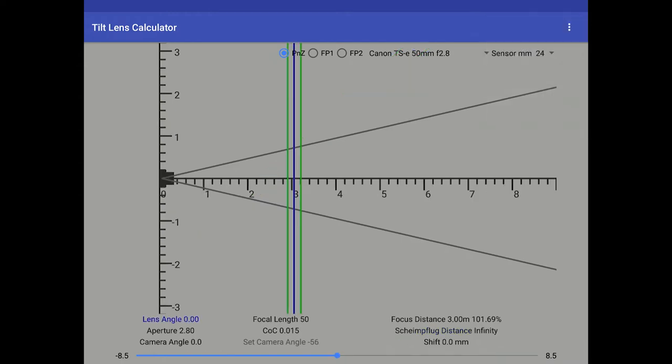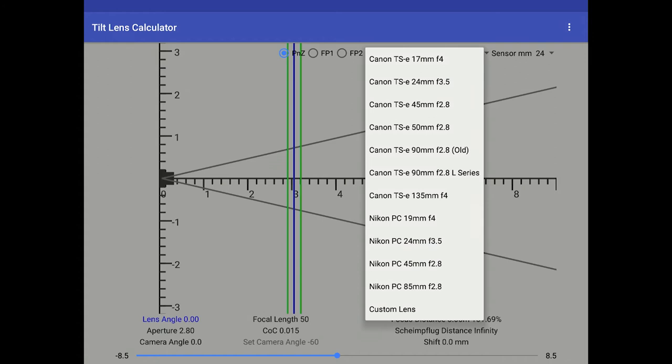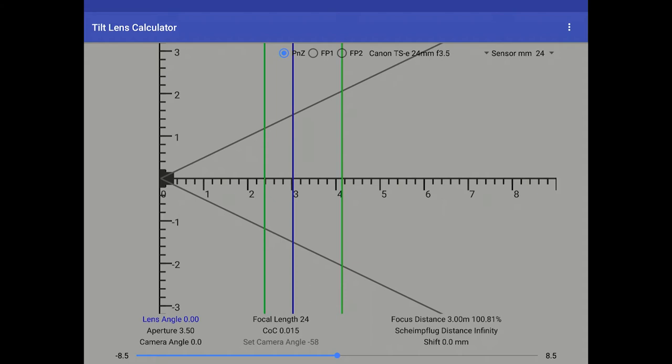The lens drop-down box has most of the Canon lenses, most of the Nikon lenses, and you've got a custom lens option at the bottom. So I'm going to select the 24mm Canon for the rest of this demonstration.